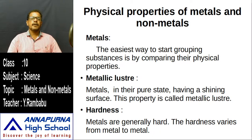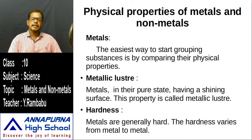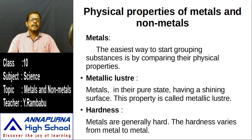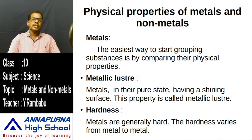The first important physical property of metals is metallic luster. The properties of metals are also reflected in how we use them in daily life. The first important property is metallic luster.